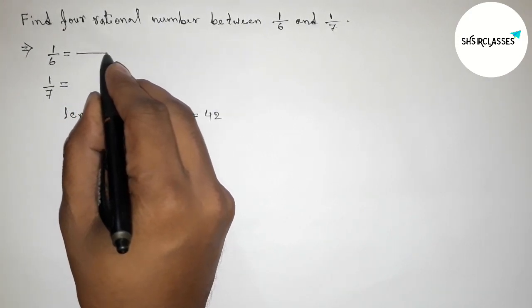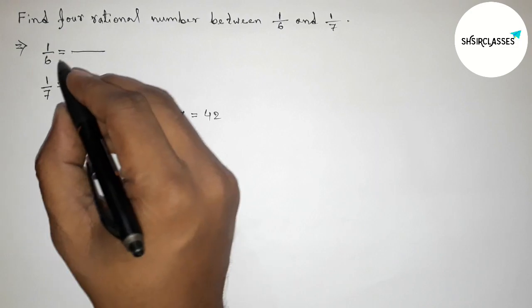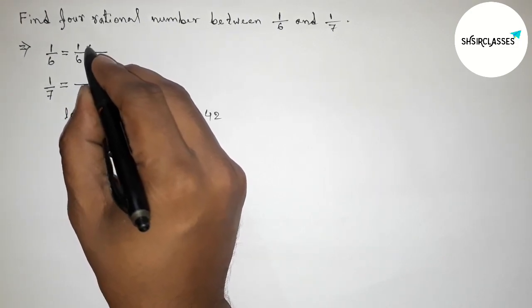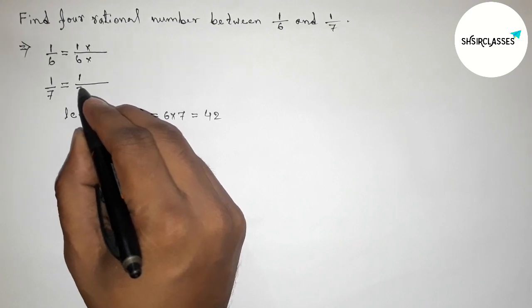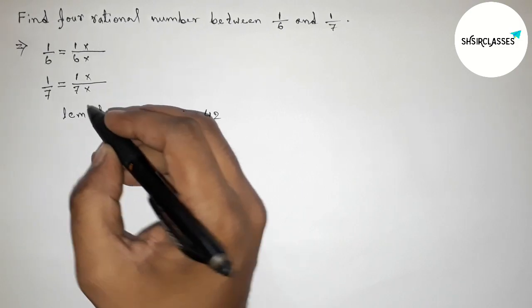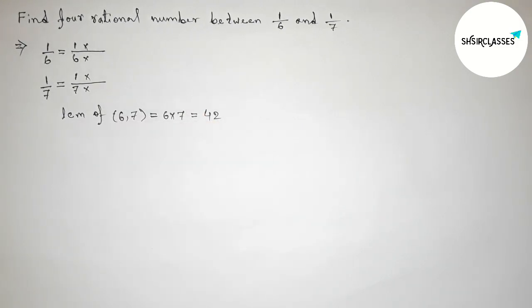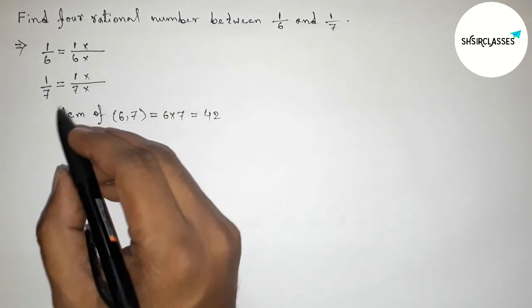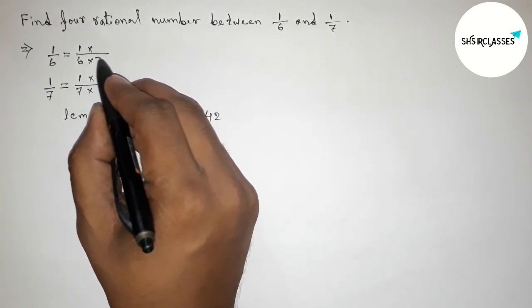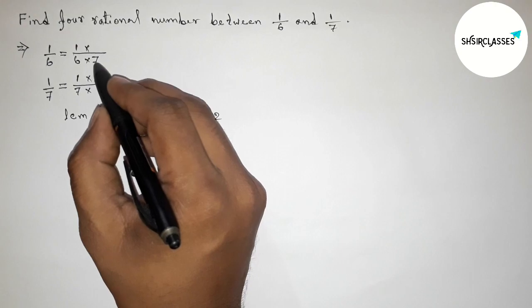So we have to make the denominators equal to 42. So now doing some important calculation here. First write down here 1 by 6 by this way and taking multiplication by this way, and similarly 1 by 7.